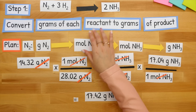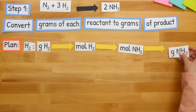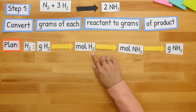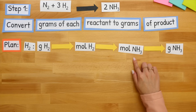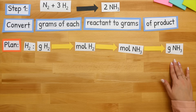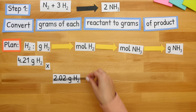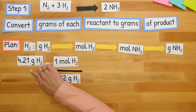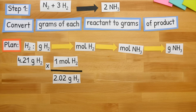We have to do the same exact process, but this time for H2. So once again, we'll go from grams of our reactant to grams of our product. Starting with our grams of H2, we'll convert this to moles of H2 using our molar mass of H2, then from moles of H2 to moles of NH3 using a mole-to-mole ratio from our balanced equation. Starting with our given value of 4.21 grams of H2, we'll align that with our molar mass of H2, putting one mole of H2 on top. Our grams of H2 will then cancel.